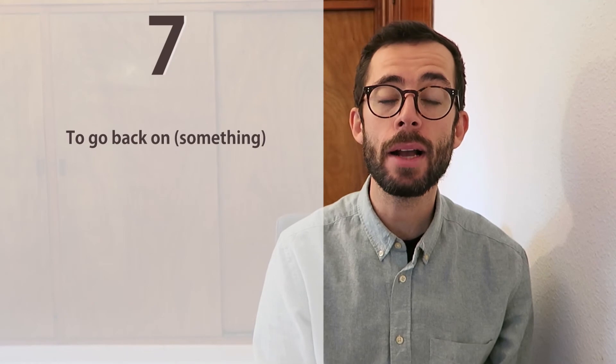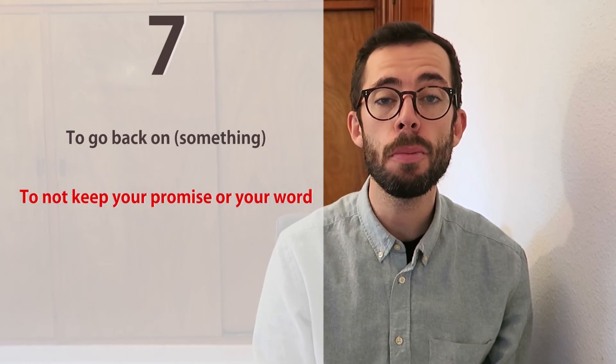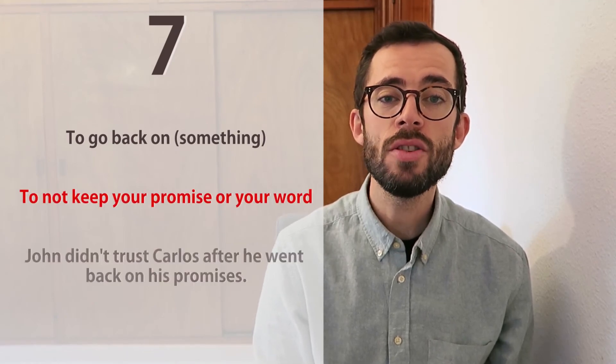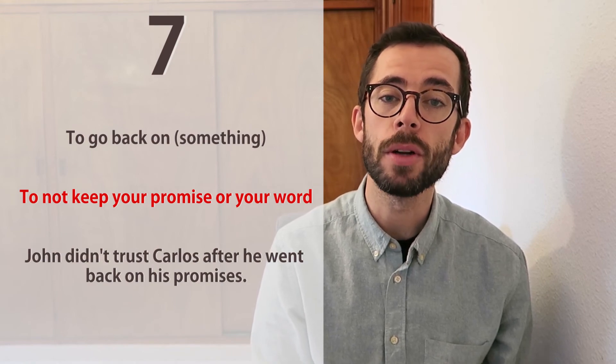Number seven is to go back on something, which means not to keep your promise or your word. For example, John didn't trust Carlos after he went back on his promises.